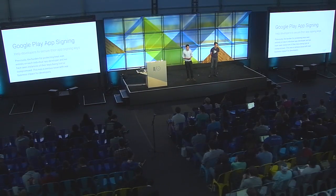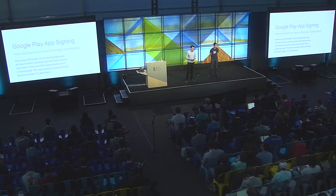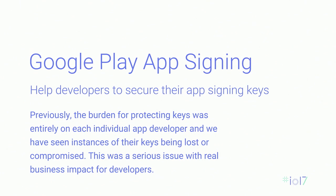You may have heard that we launched this product. App signing is an optional program for developers that provides a secure means of handling your APK signing key. Previously, the burden for signing and protecting keys was entirely on each individual app developer, and we've seen instances of keys being lost or compromised — and in those situations, there was nothing we could do to help. With Google Play app signing, developers' keys are stored on Google's infrastructure, and developers benefit from Google's ongoing investment in technical security.